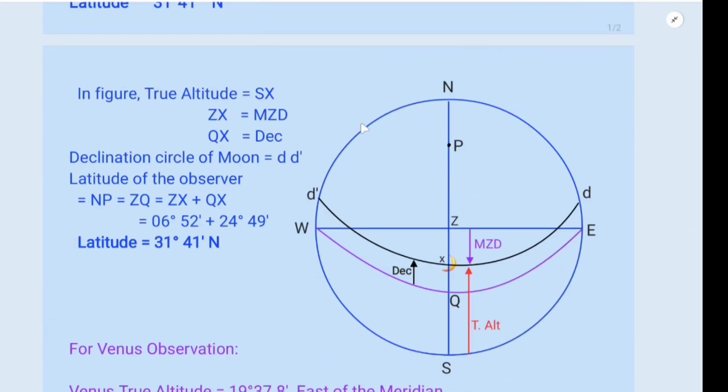So in this figure, a celestial horizon diagram is drawn. N is north, W is west, S is south, E is east, and WQE is equinoctial. And this black one, d, is the declination circle of moon. In the figure, true altitude is equal to SX - from here to here, horizon to the body is true altitude, S to X. And ZX, Z to body, is MZD, meridian zenith distance. And QX, Q to X, this is declination.